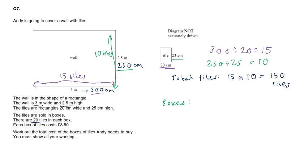So to work out how many boxes, we'd want to think about how many lots of 20 fit into 150. So 150 divided by 20 gives 7.5.